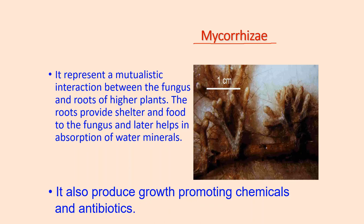One more example is mycorrhiza. It represents a mutualistic interaction between the hyphae of the fungus Boletus and the roots of higher plants such as Pinus. The roots provide food and shelter to the fungus, while the fungus helps in the absorption of water and minerals, produces growth-promoting chemicals, and secretes antibiotics to provide protection from pathogenic organisms. Mycorrhizae are divided into two categories based on their location.